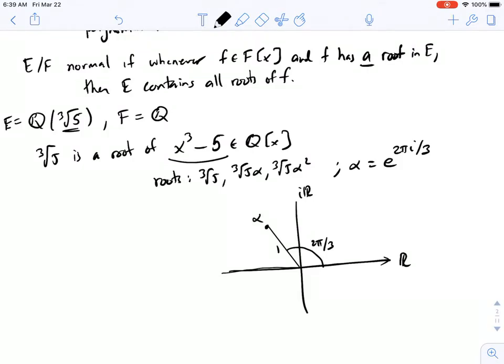If it's not a real number, then we know that alpha is not going to be in Q adjoin the cube root of 5, and neither is the cube root of 5 times alpha, because this is still going to be a non-real number.